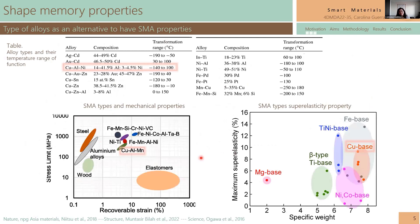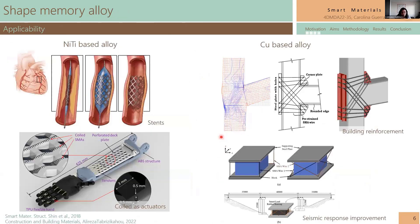There are many alloys that can have this kind of property; the most famous is nickel-titanium. Today there are several studies on other kinds of systems or alloys. One of them is the copper-aluminum-nickel system, which has demonstrated good recoverable strain and great superelasticity at different specific weights. The nickel-titanium-based alloy has been used in biomedical applications such as stents, and also as actuators in coiled shape memory alloys to improve or automate movement in robotics. However, because nickel-titanium is expensive, it can only be used in smaller devices.